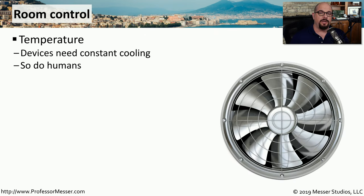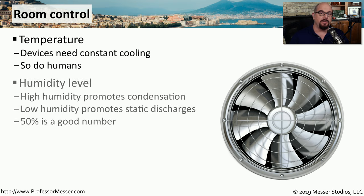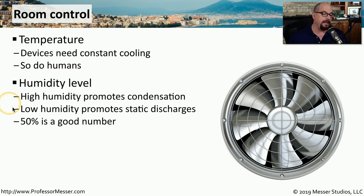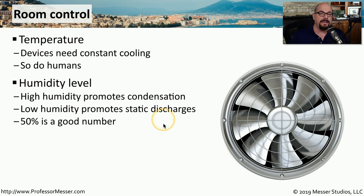The electronic devices we use in technology are expected to run at a particular temperature level, and the manufacturer's documentation will tell you what those particular ranges are. It should also give you information on an expected humidity level. High humidity means condensation on these devices, which is very bad for electronics, and low humidity means static discharges. Ideally, you need a number in between — around 50% — though it can be difficult to maintain in a cooled environment.